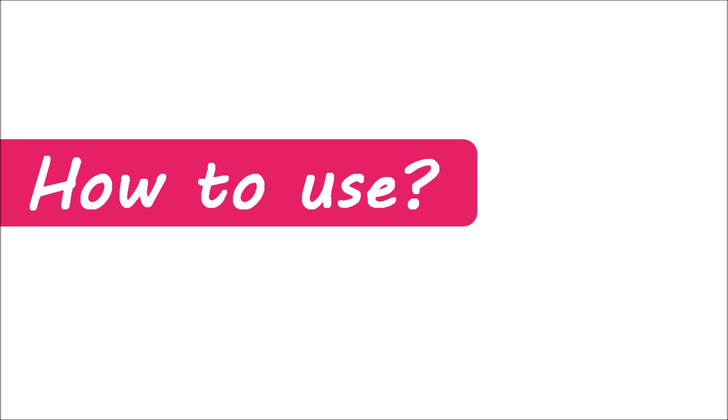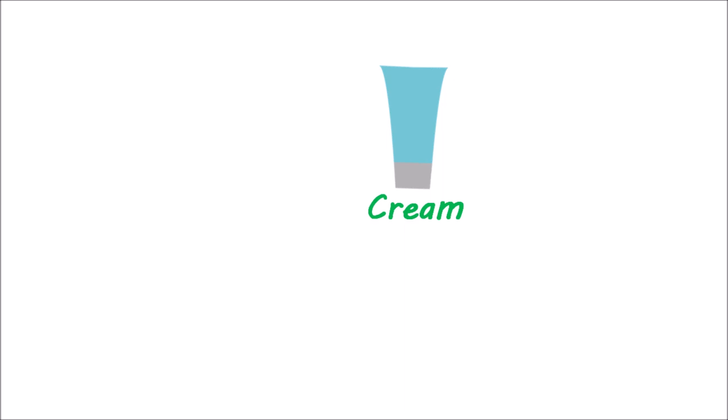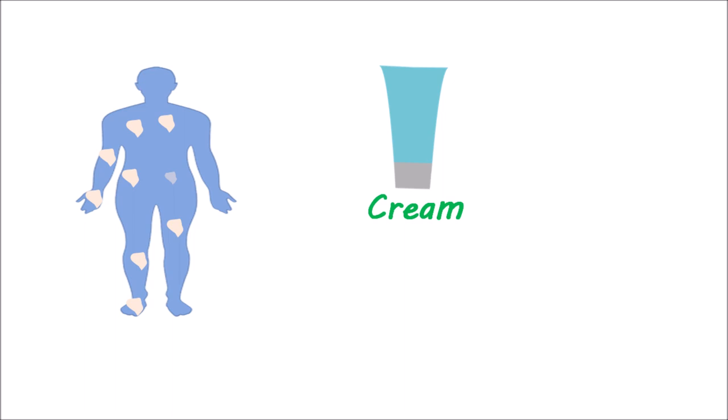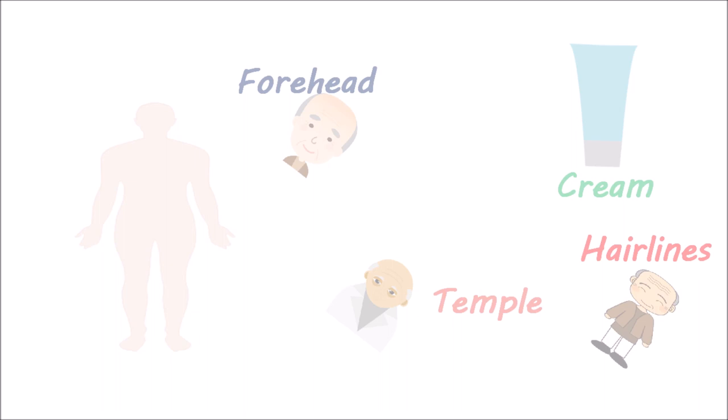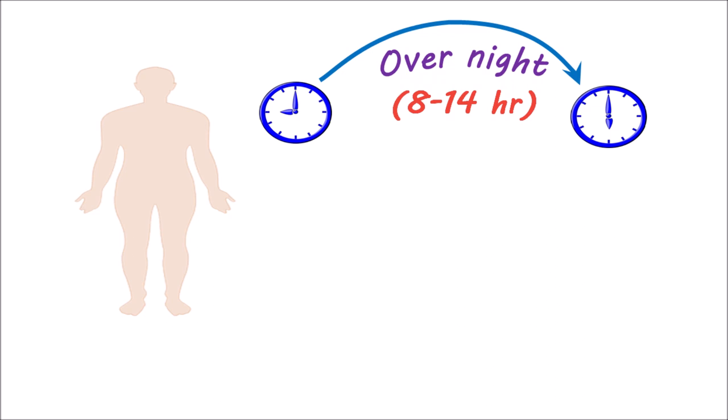For the treatment of scabies, permethrin cream is generally applied at 5% strength, although a 5% lotion can also be used for the same purpose. The cream should be uniformly applied to the entire body from head to toe. Skin folds and hairy areas are especially targeted, but it should not be applied to the eyes, mouth, or nose. In the elderly, special attention should be given to cover areas such as the forehead, temples, and hairlines for effective treatment. Permethrin should be left in contact with affected skin areas overnight, and after 8 to 14 hours, it can be removed by washing with water.